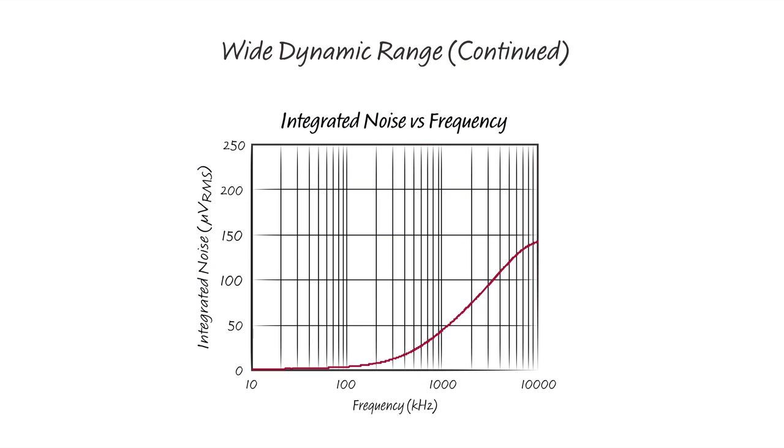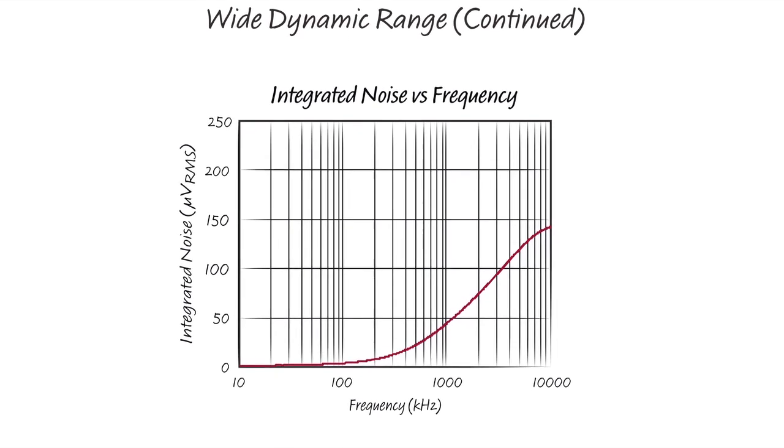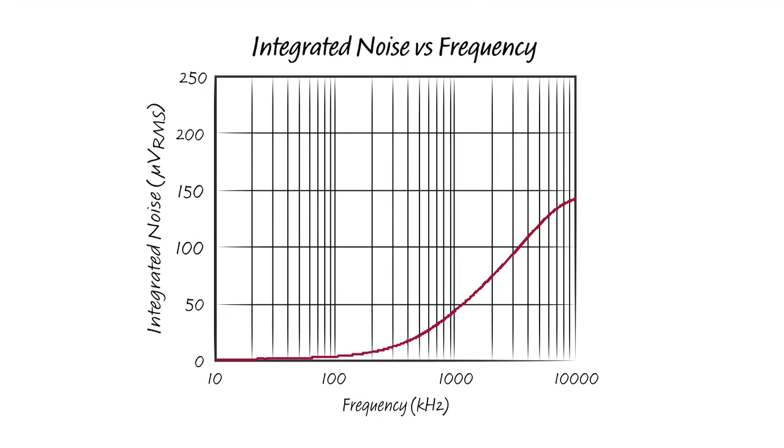The LTC6090 also boasts low wideband integrated noise. With 140 volt peak-to-peak output swing capability, 140 microvolts RMS of integrated noise over 10 MHz bandwidth, and its 140 dB of input common mode rejection, the LTC6090 has the potential to provide over 110 dB of dynamic range.